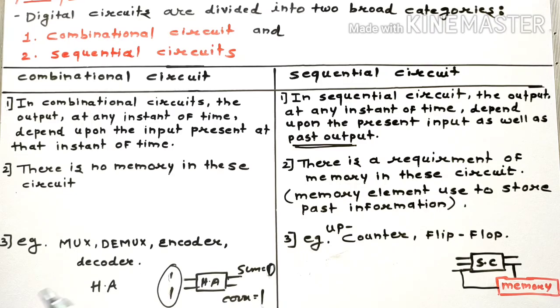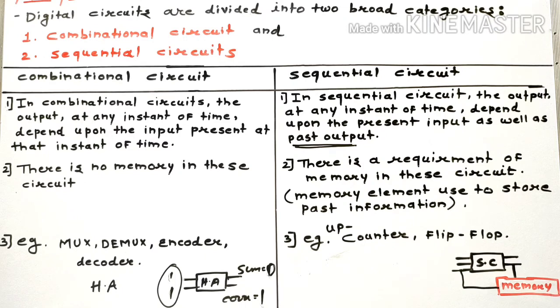Similarly, mux, demux, encoder, and decoder — these are also combinational circuits. Now let's move towards sequential circuits.